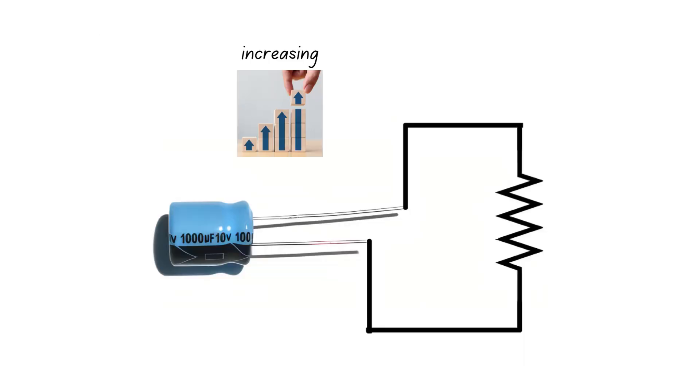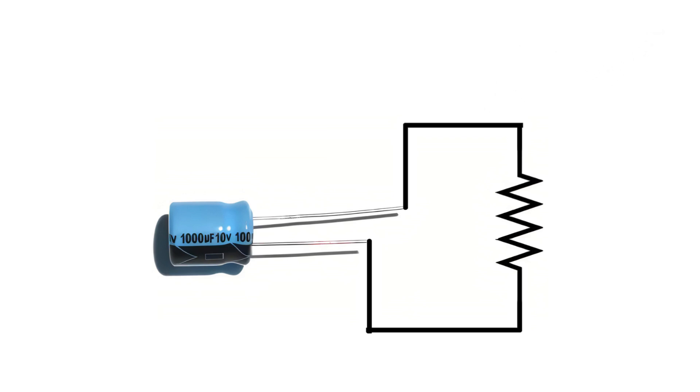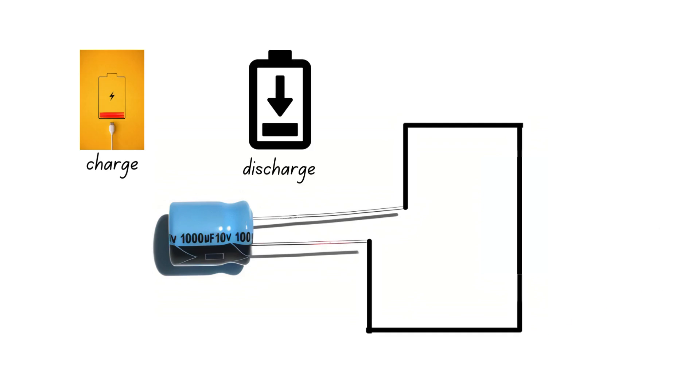So, increasing either the resistance in the circuit or the capacitance of the capacitor increases the time constant, meaning the capacitor takes longer to charge and discharge. On the other hand, removing the resistance altogether means that the capacitor will charge and discharge almost instantaneously.